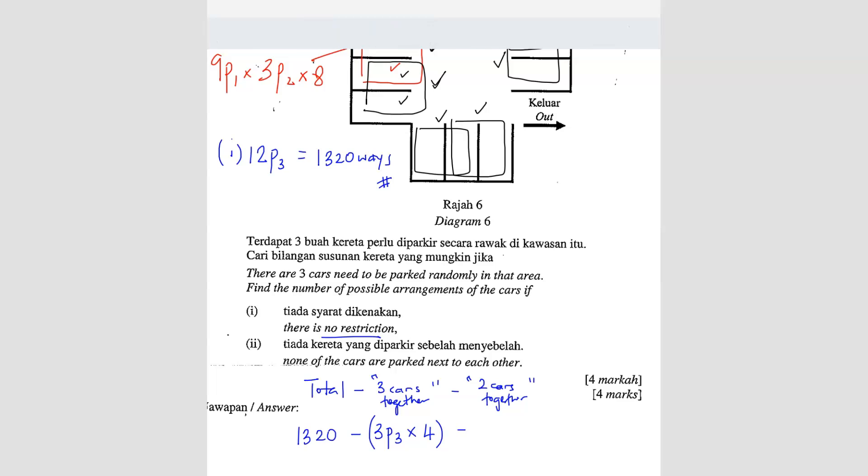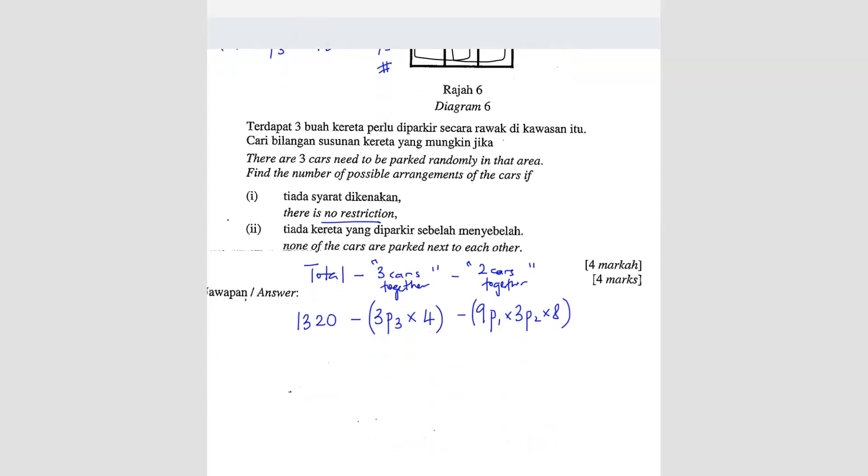9P1 times 3P2 times 8. So what you will get is 1320 minus, here should get 24 ways, minus 432. So your final answer will be 864 ways.